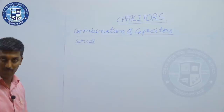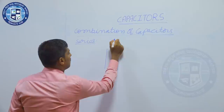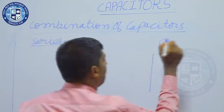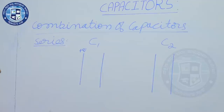What is a series combination? We know a capacitor consists of two plates. Say C1 is one capacitor and C2 is another capacitor. This is the left plate of C1. Suppose C1 has a charge plus Q — it is positively charged, so the left plate of C1 is positively charged.